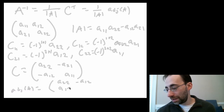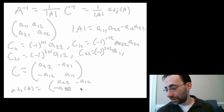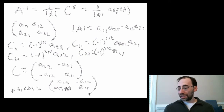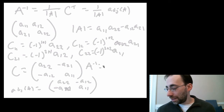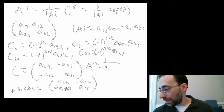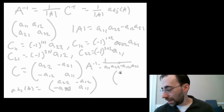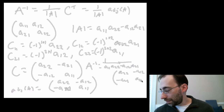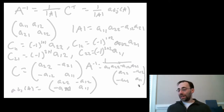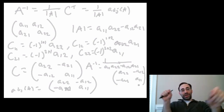So the inverse of A equals 1 over (A11*A22 - A12*A21), times the matrix [A22, -A12; -A21, A11]. In other words, for a 2x2 matrix, the inverse is 1 over the determinant times the matrix where you switch the diagonal elements and put negative signs in front of the off-diagonals. That's a simple shorthand for the 2x2 case.